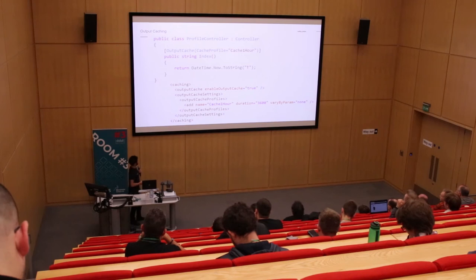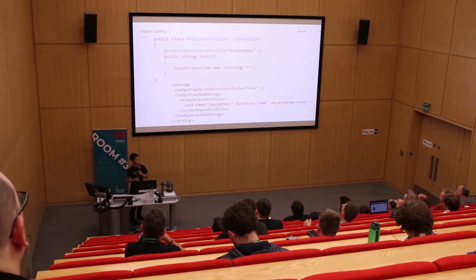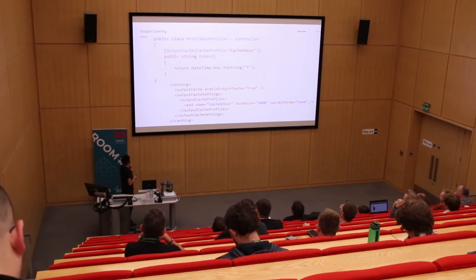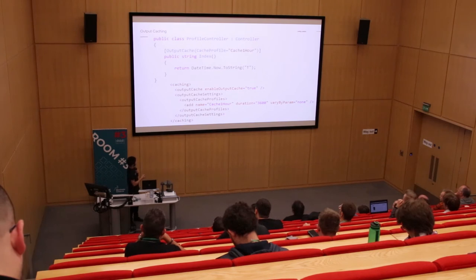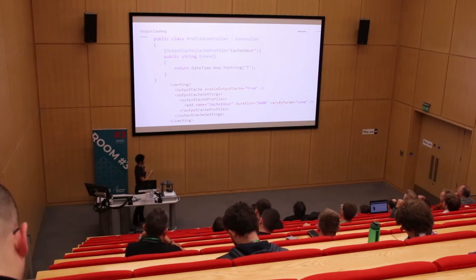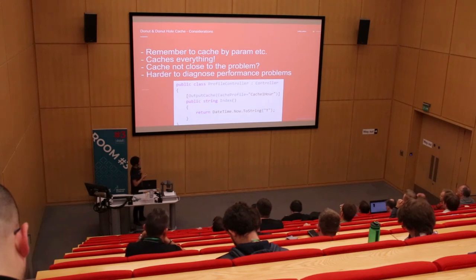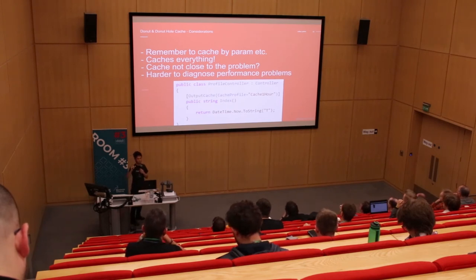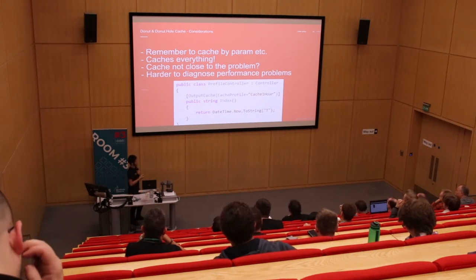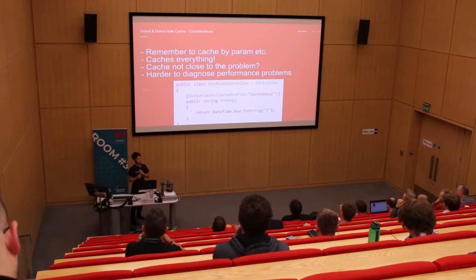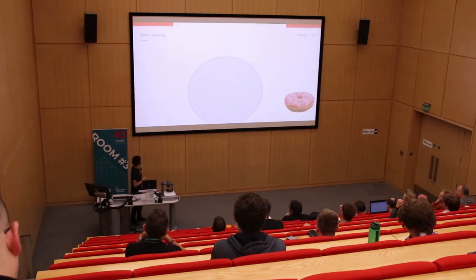Output caching - has anyone dealt with output caching before? Basically you add an attribute to your MVC controller - output cache - set a profile name, in this case 'cache one hour', and set it all up via XML. Similar to before, except now I can actually turn this off via the web config. It just works - it caches the HTML being output by the controller. But what happens if you want to deal with user logins? You're going to have to turn off some bits of cache for the page, so caching everything is not a good solution.